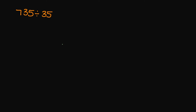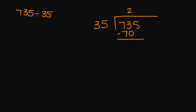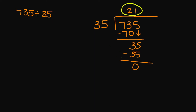Let's look at our first example. Let's say we were dividing 735 divided by 35. 35 on the outside, 735 on the inside. 35 goes into 73 two times. 35 times 2 is 70. 73 minus 70 is 3. I'm going to bring down my 5. 35 goes into 35 one time. 35 times 1 is 35. 35 minus 35 is 0. Our quotient is 21 with no remainders.